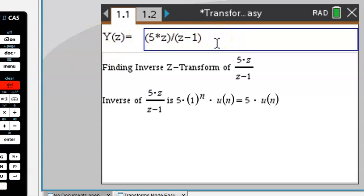Say we want to do inverse z-transform of this function here, a fractional. Then you will get the simplified answer right here, 5 times the unit function u of n.